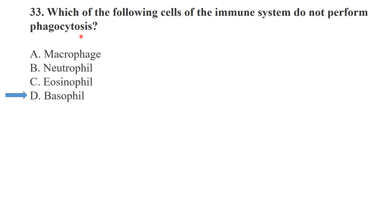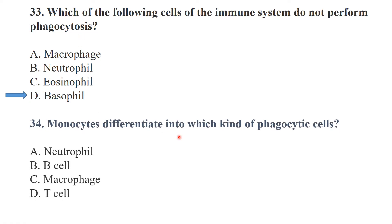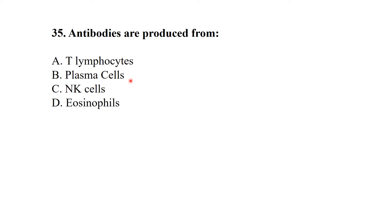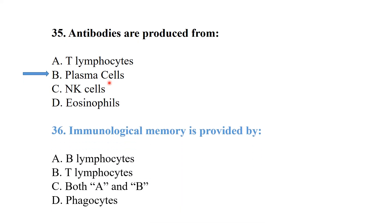Monocytes differentiate into macrophages. Antibodies are specifically produced by plasma cells, which are a type of B lymphocyte. Immunological memory is provided by both B lymphocytes and T lymphocytes.